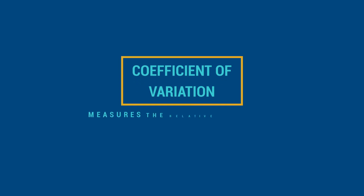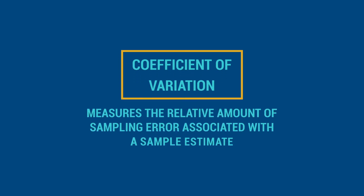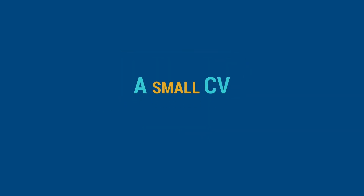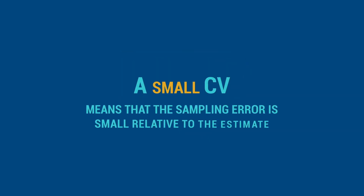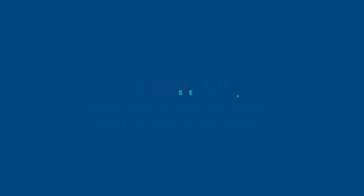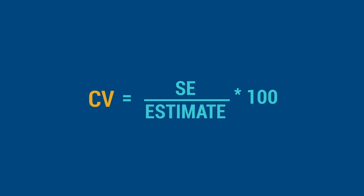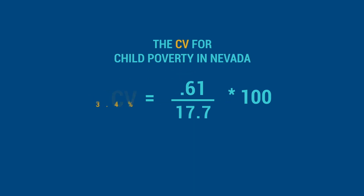The coefficient of variation, or CV, is another useful measure of sampling error. It calculates the amount of sampling error relative to the sample estimate. A small CV means that the sampling error is small relative to the estimate, and data users can be more confident that the estimate is close to the population value. The CV is calculated by dividing an estimate's standard error by the estimate itself and multiplying by 100. The CV for child poverty in Nevada is 3%, meaning the amount of sampling error in the child poverty estimate is 3% of the estimate.